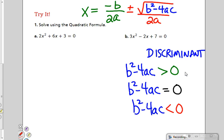If it's green, which is positive, greater than 0, I will expect to have two real solutions. Notice the use of the word real. Therefore, we will have two real solutions.